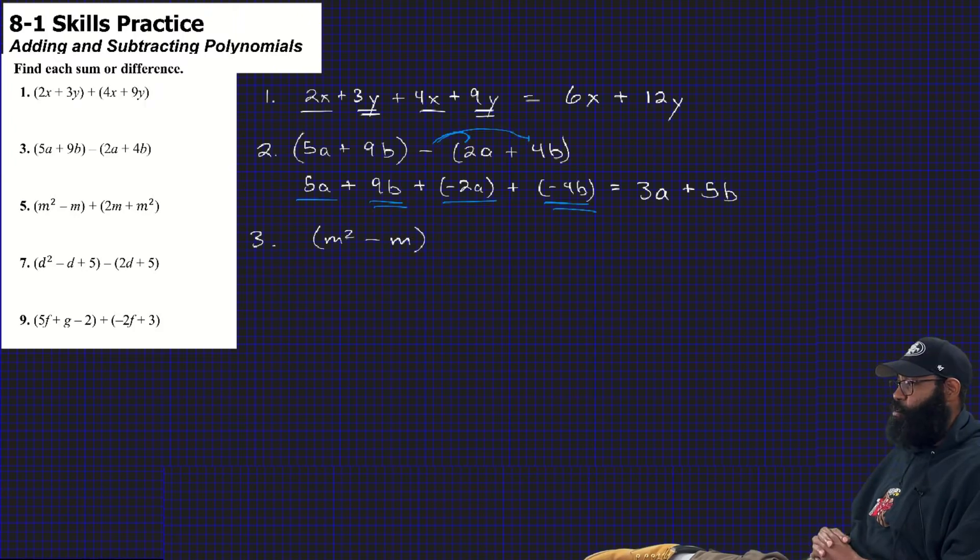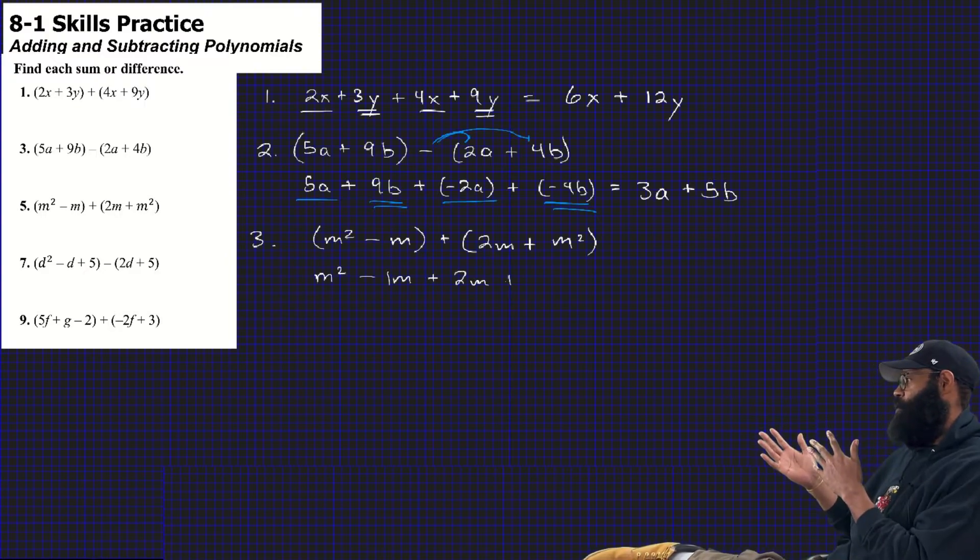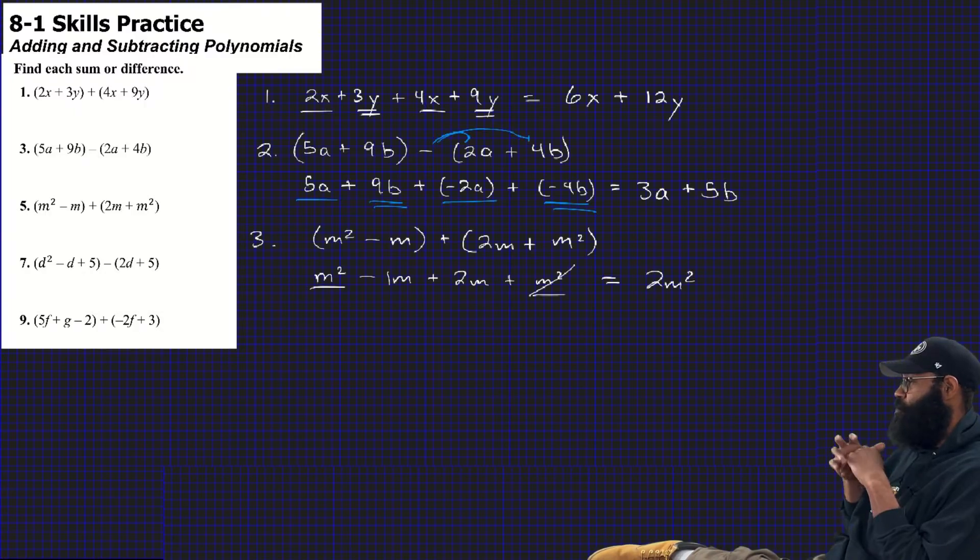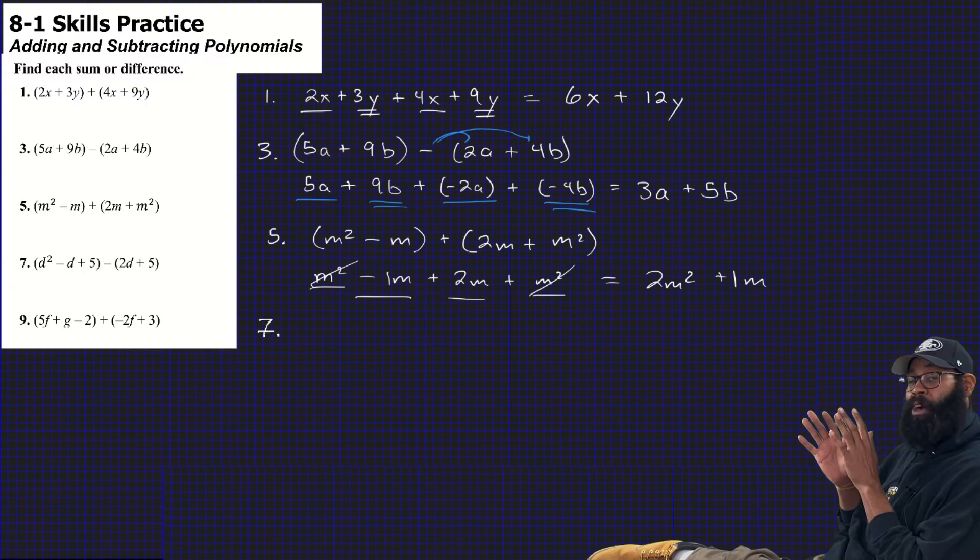Remember to pause as I'm going too fast. But we got this, guys. The 5b came from 9 minus 4. So, for number 3, do you see the distributive property? Number 3, it should say number 5, but the third one we're doing. m squared minus m, and the quantity 2m plus m squared. This time, guys, I put my parentheses. But even putting them, I take them right away because there's nothing to distribute. The first term and the last term are like terms. And the second and third term are like terms.